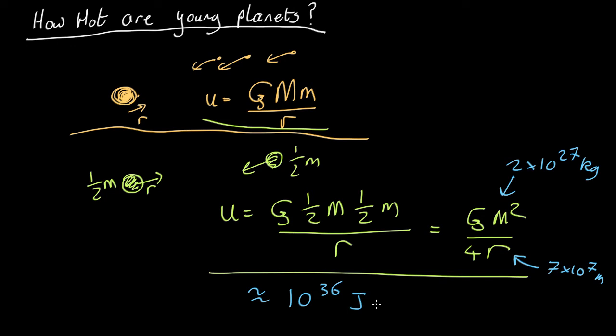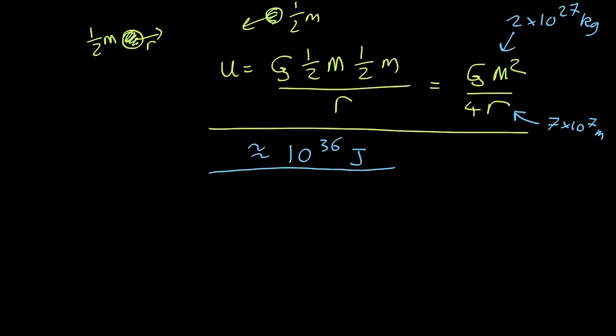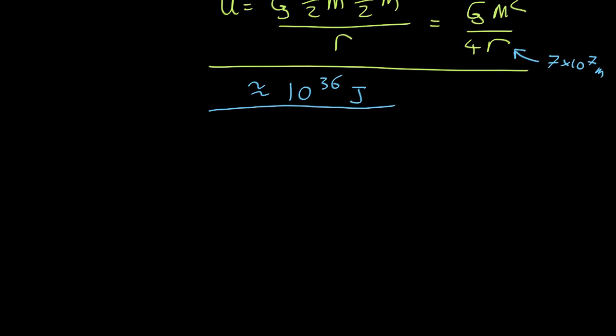Probably an underestimate, as we said. It's probably a little bit bigger than that, but gives us the rough magnitude. Now that's a big number, but of course astronomy is full of big numbers. How can we estimate whether that's going to make things hot enough? Is that enough to make something the mass of Jupiter hot?